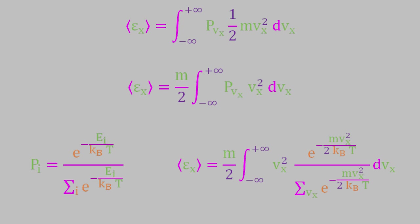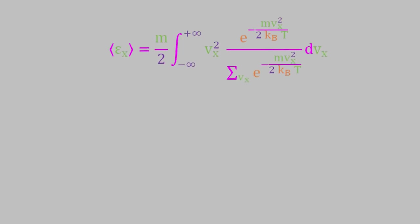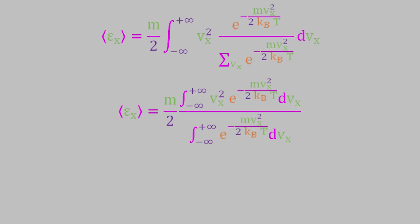We can now split this into two integrals, one in the numerator and one in the denominator. Notice that the summation symbol has been dropped out. That's because taking the integral really makes that redundant. Taking the integral over all possible translational energy states.